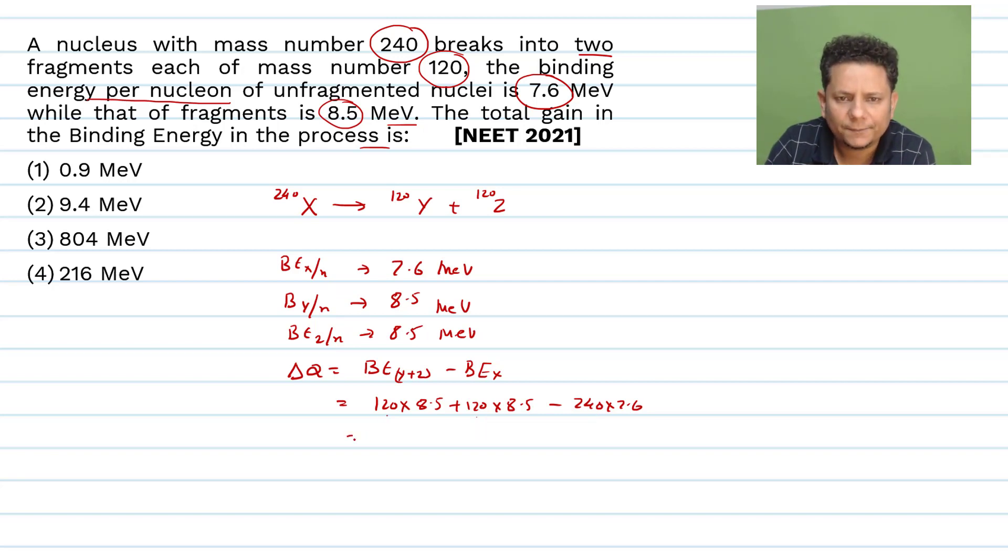So this will be equal to 2 multiplied by 120 multiplied by 8.5 minus 240 multiplied by 7.6.